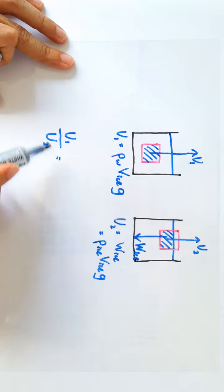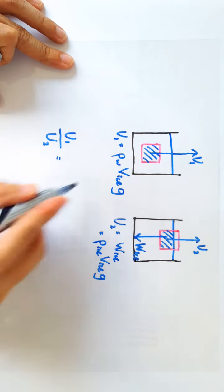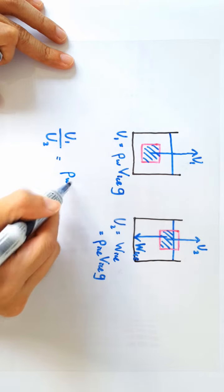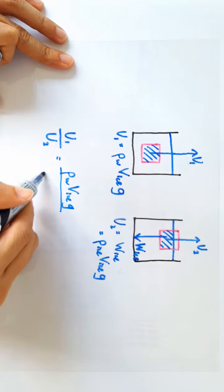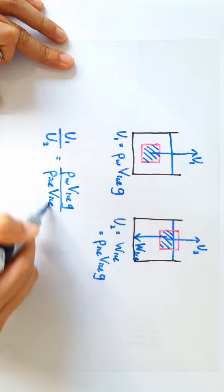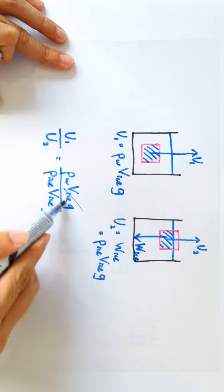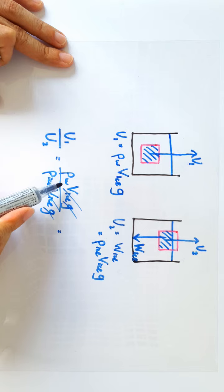So let's put these two into this equation here. So what we have is this. The volume of ice and g of course can be cancelled away. So the ratio of the upthrust turns out to be the ratio of the densities.